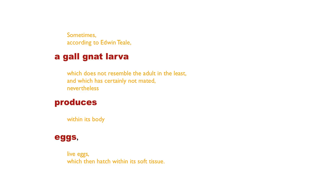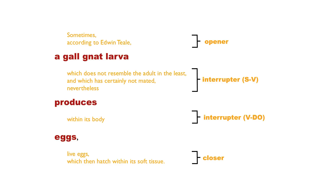You can see how Annie Dillard has cleverly put different phrases and clauses in between the main idea, making it a really interesting and rhythmic sentence. The orangish-yellow material here is modifying that main idea. We have a modifier as an opener, and we have it as a subject-verb interrupter — the gall gnat larva produces is the subject-verb of the sentence, but Dillard has decided to interrupt the subject and verb with more modifiers. You can also see a verb-direct object interrupter: that prepositional phrase is interrupting 'produces' and 'eggs.' And finally, she also has modification at the end of the sentence. Pretty cool.